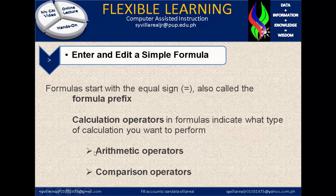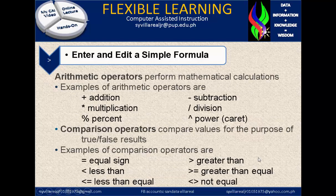There are two types: first, arithmetic operators; second, comparison operators. Arithmetic operators perform mathematical calculations. Examples include: positive sign for addition, minus sign for subtraction, asterisk for multiplication, slash for division, percent for percentage, and caret for power. Comparison operators compare values for the purpose of true or false results. Examples include: equal sign, greater than, less than, greater than or equal, less than or equal, and not equal.